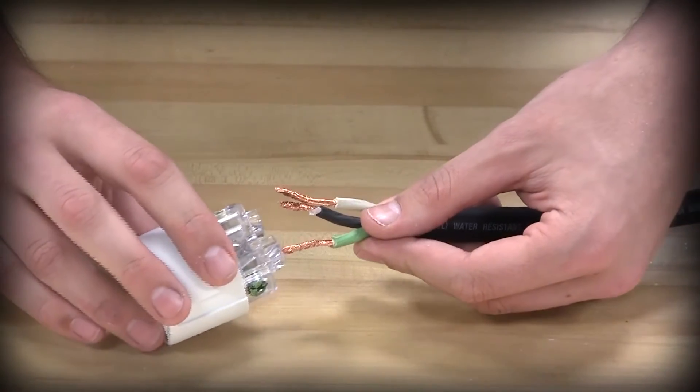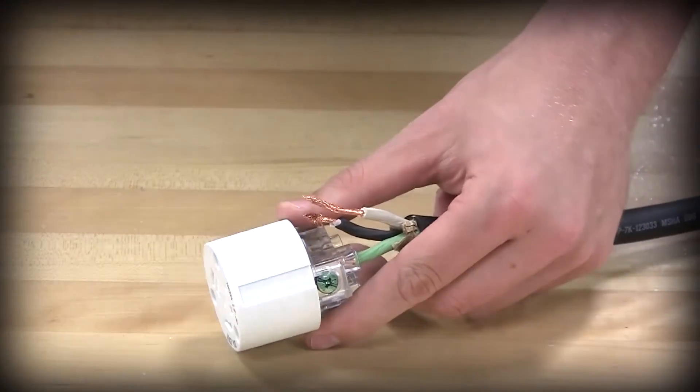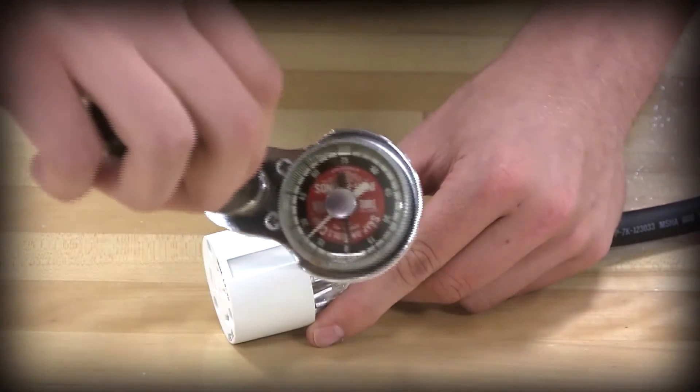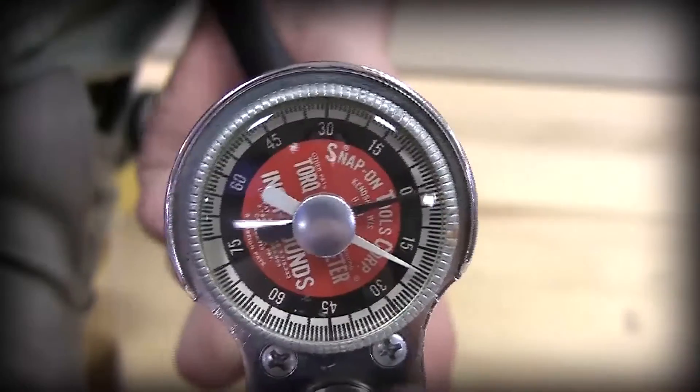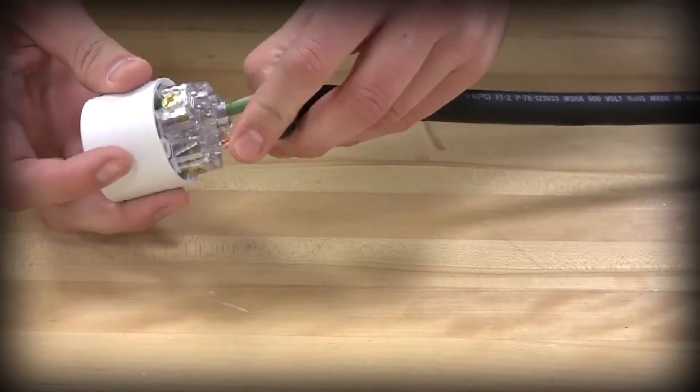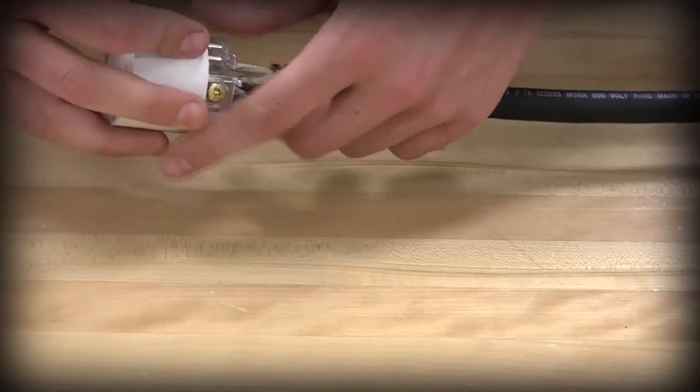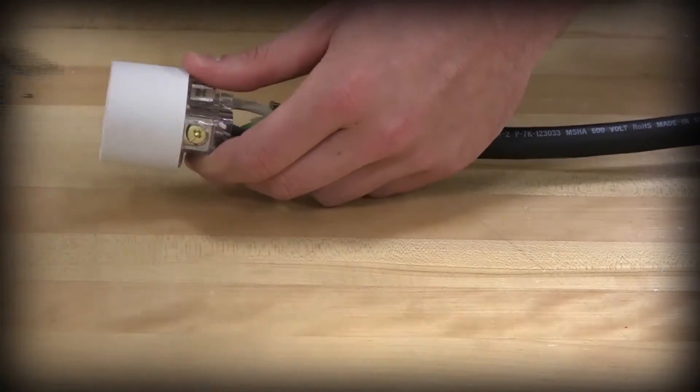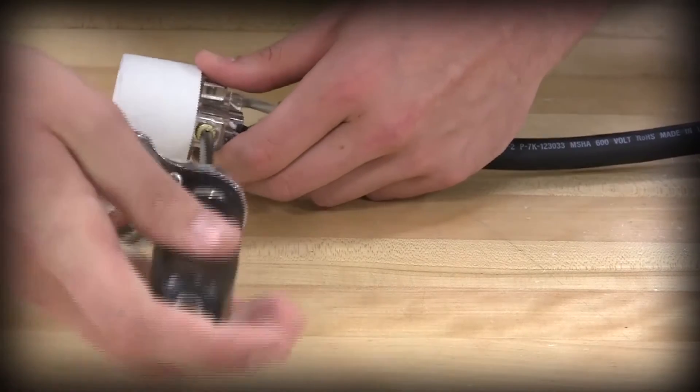Insert the stripped conductors into the individual wiring pockets and tighten each terminal screw as wire is inserted using 15 to 20 inch pounds of torque. The green screw is for the green ground conductor while the silver screw is for the neutral white conductor if it is present. The brass screw goes into the black conductor.